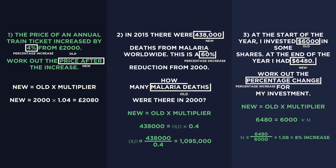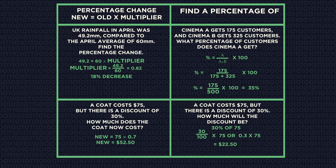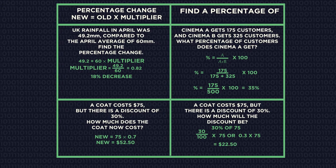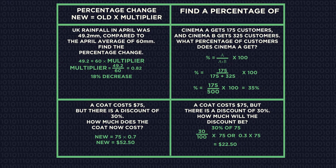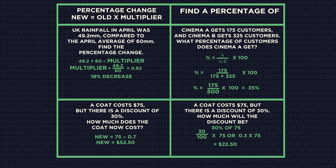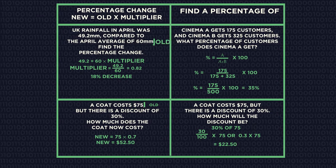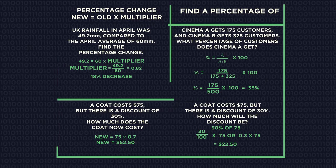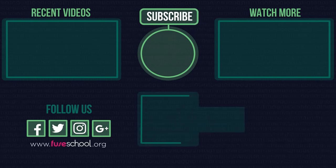So there we have percentage changes — you just need to remember this formula. A common thing people can find tricky is working out if it's a percentage change question or if it's just asking us to find a percentage of. If one value isn't obviously older or better than the other, it's a finding-a-percentage question. Take your time to work out what is being asked, then check your answer makes sense at the end. If you liked the video, give it a thumbs up and don't forget to subscribe. Comment below if you have any questions.